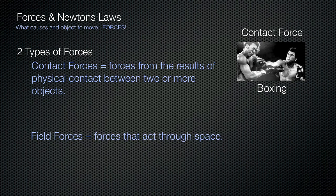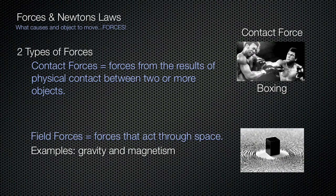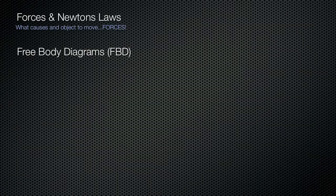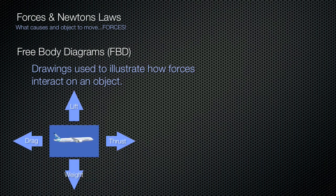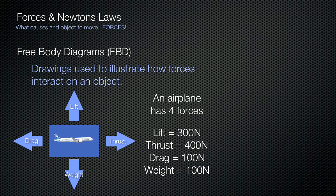Field forces, on the other hand, are forces that act through space. Examples of field forces are gravity and magnetism. There are many forces that may act on an object, which can get complicated to analyze. To make it simpler, we draw a free body diagram — an illustration that helps simplify the forces interacting on an object. For instance, an airplane has four forces acting on it: lift, drag, weight, and thrust. If we quantify those forces, we can draw a free body diagram showing our object and how the forces interact with it.